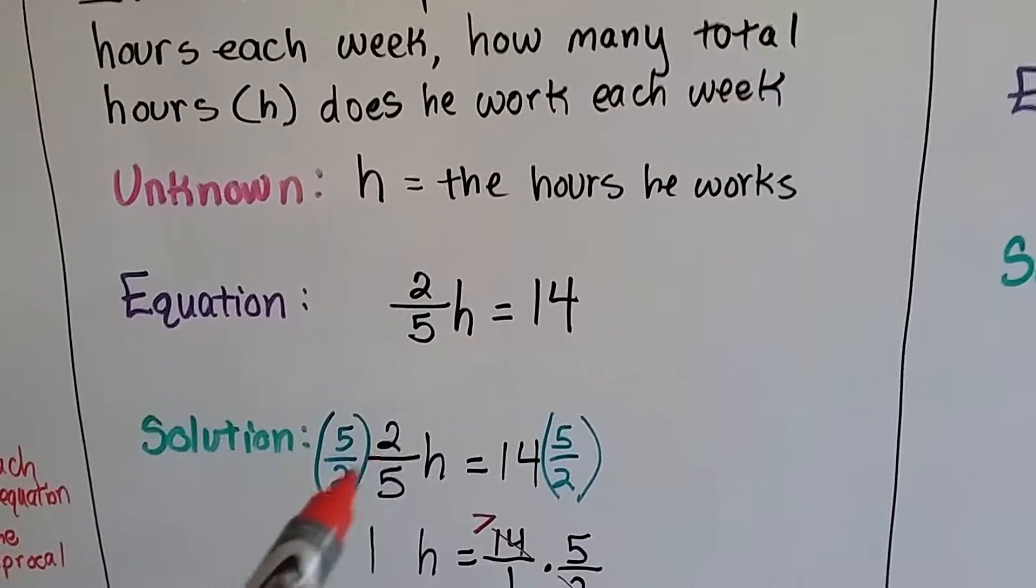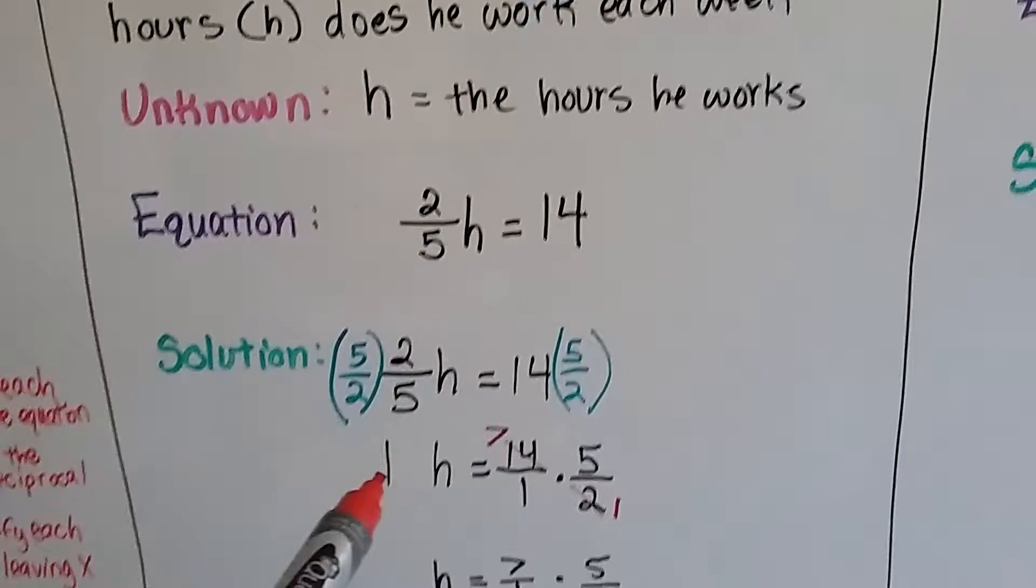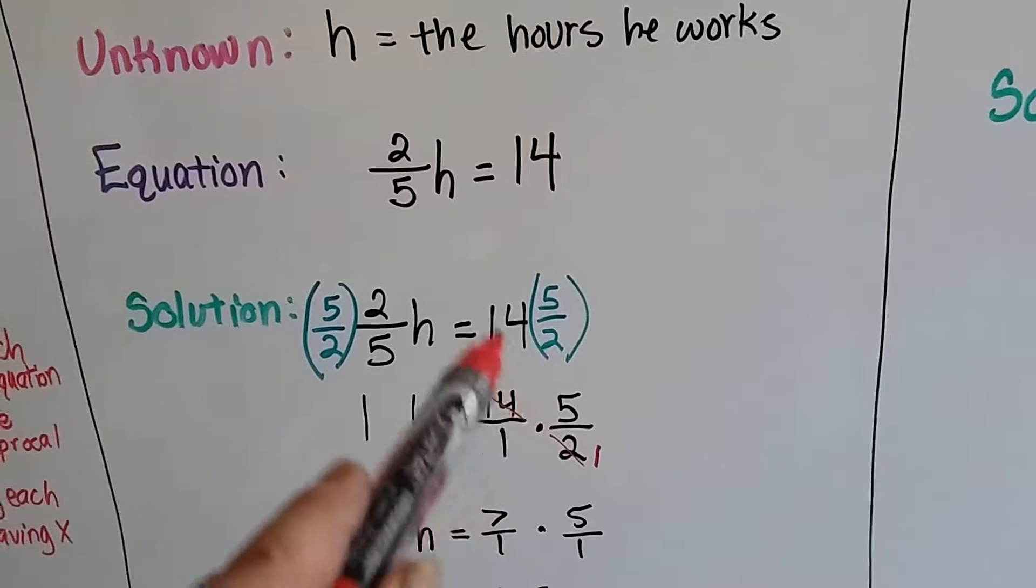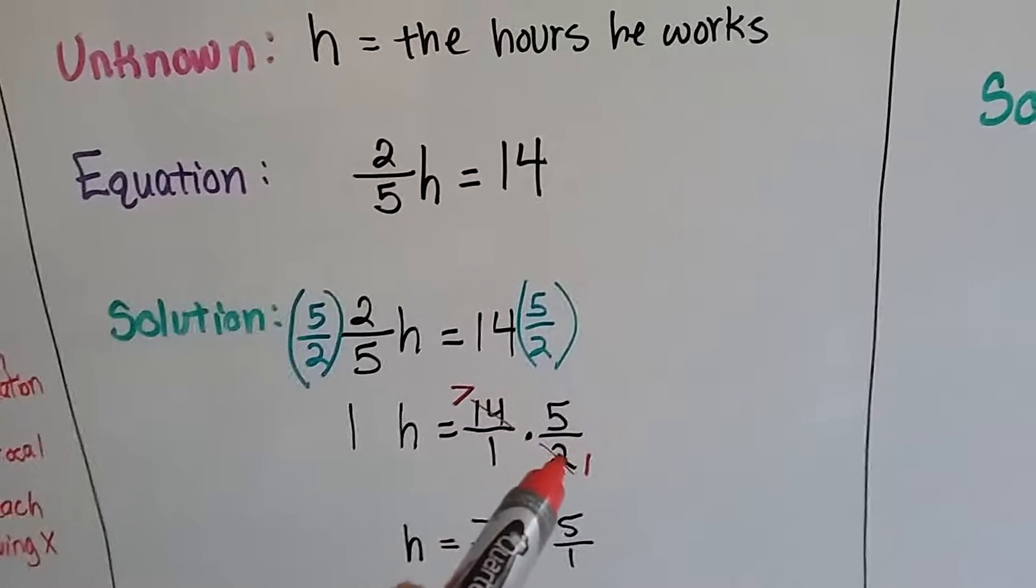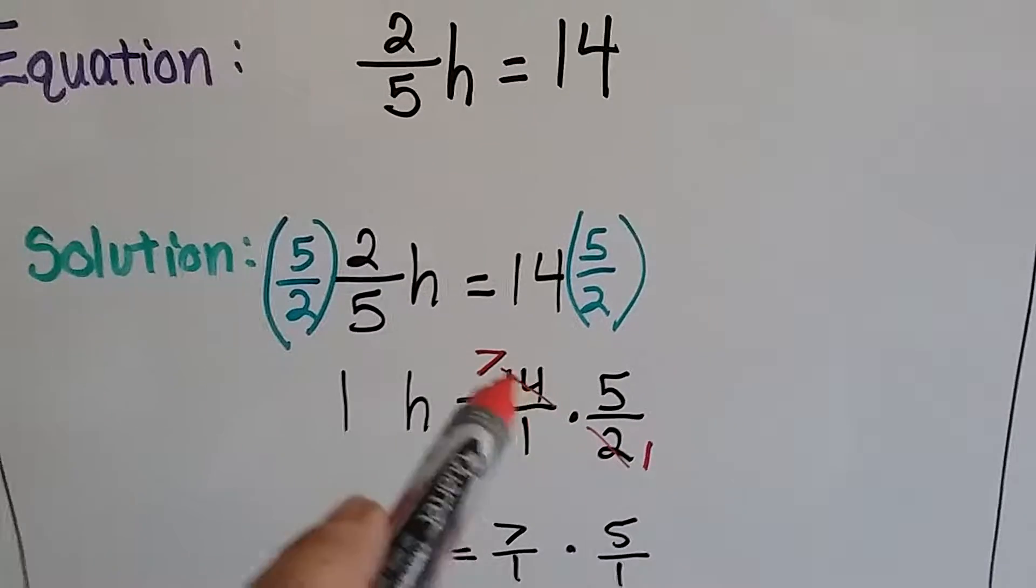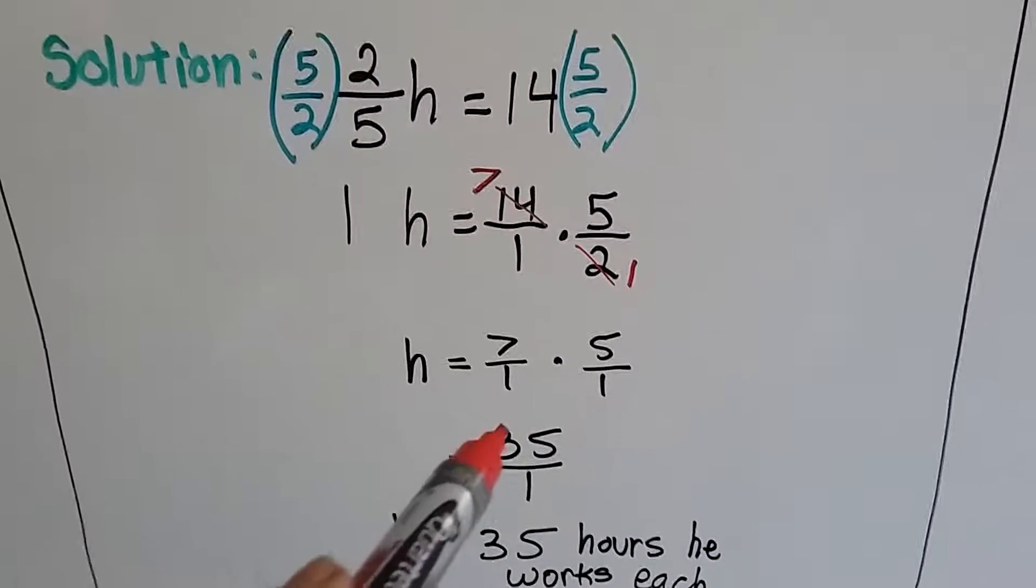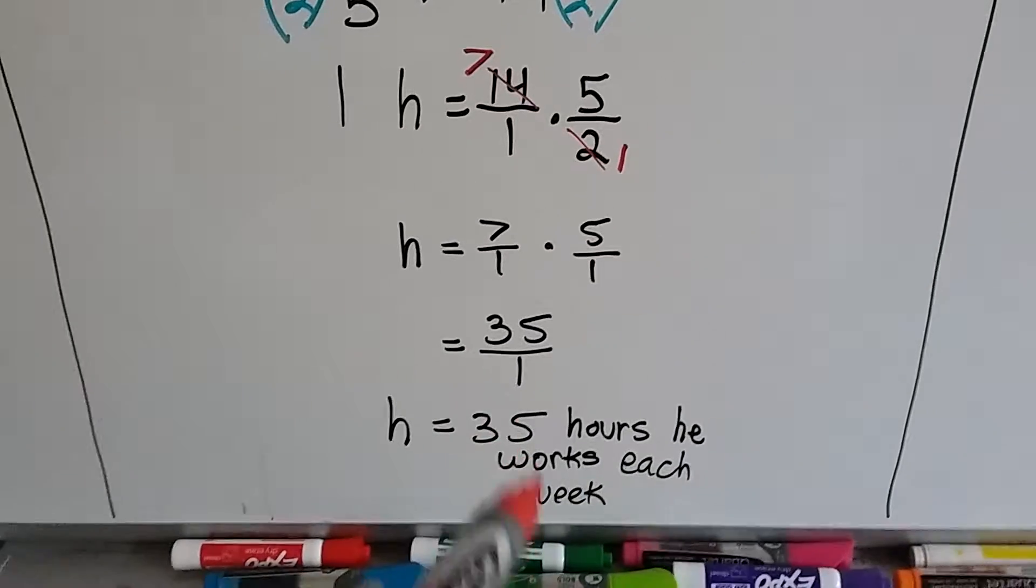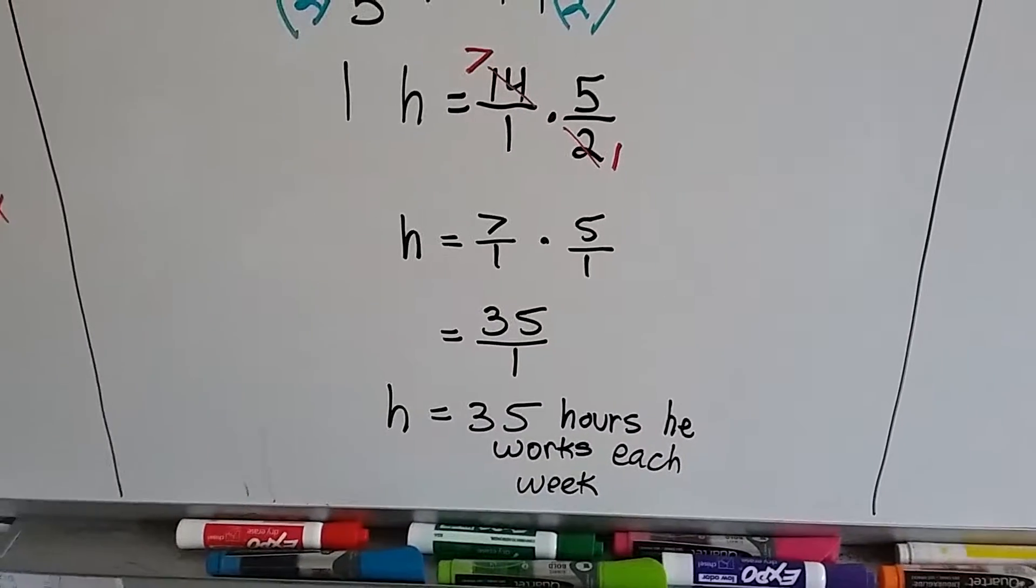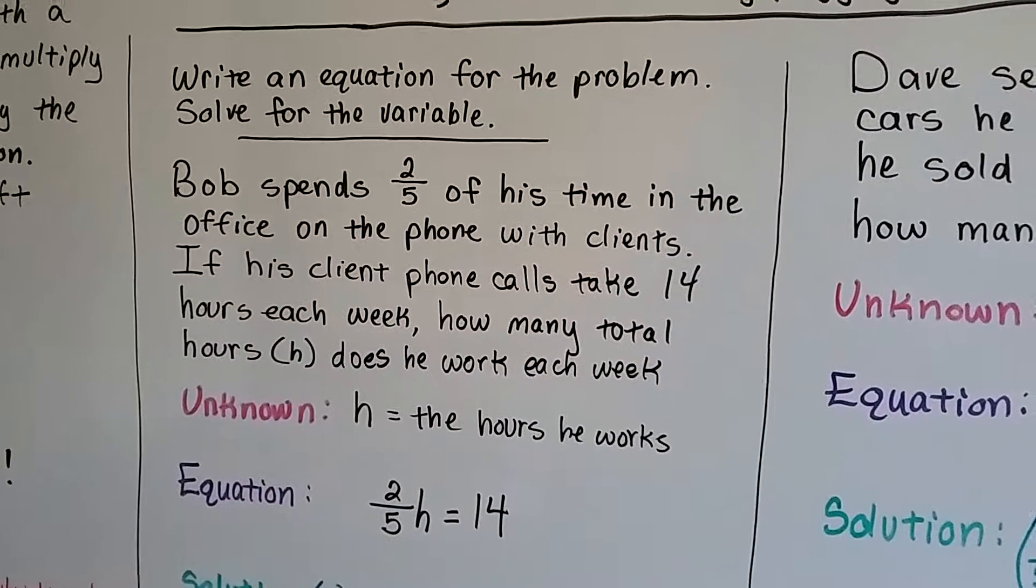So we put the reciprocal for 2 fifths on each side, and that makes these guys turn into 10 over 10, which equals 1. We don't need to write that 1 in front of the h. We open this up as a fraction and put 14 over 1 times 5 over 2, and here we get to cancel out. There's 1, 2 here, and 7 twos in the 14, so that's a 1 and that's a 7. That leaves us with 7 times 5 over 1, which is 35 over 1, which means h, isolated by itself, is 35 hours that he works each week.